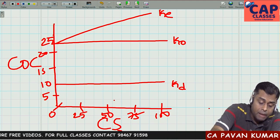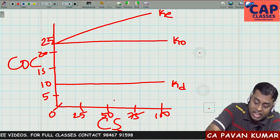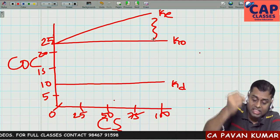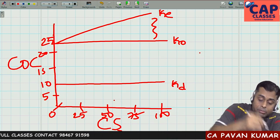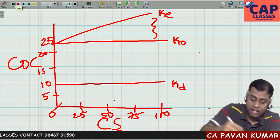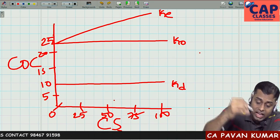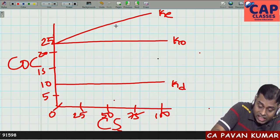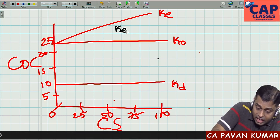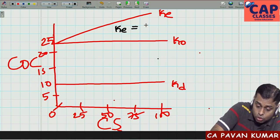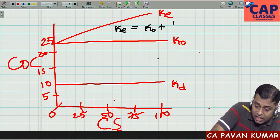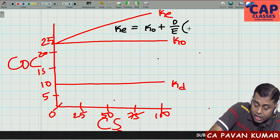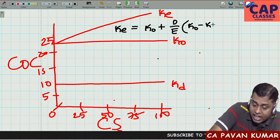MM approach defined the risk premium and how KE is to be calculated. They gave the equation: KE = KO + (Debt/Equity) × (KO − KD).